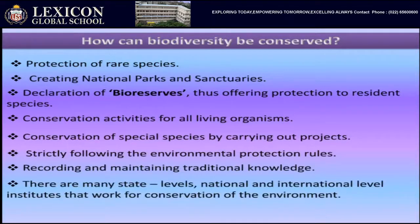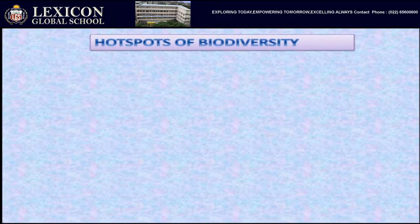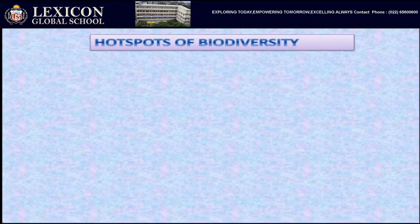Now we study about hot spots of biodiversity. Where are hot spots seen in the world and in India? For example, kangaroos are not found all over the world — most are found in Australia. Certain animals and certain areas in the world and India have become hot spots of biodiversity.